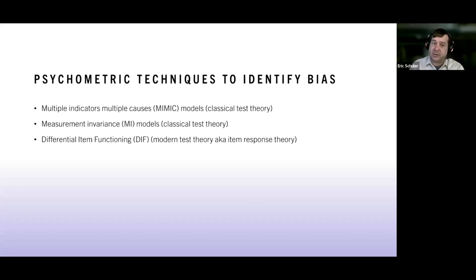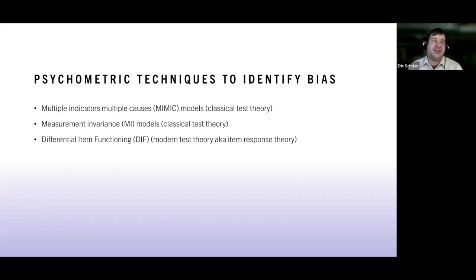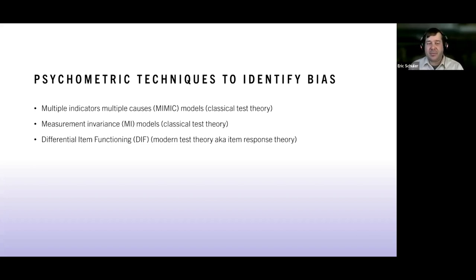Think of MIMIC models as the chainsaw, measurement invariance as the paring knife, and differential item functioning from item response theory as the scalpel — it really depends on the precision needed. In the next couple of slides I'll talk about each of these three methods, how they relate to equity and bias detection, the steps within that, and then we'll actually apply them.